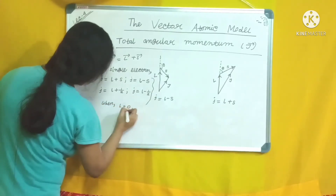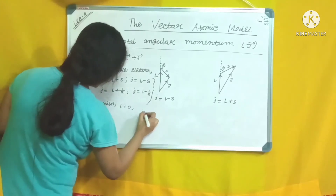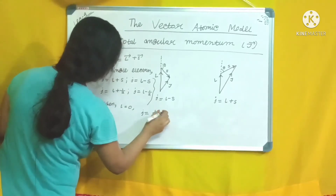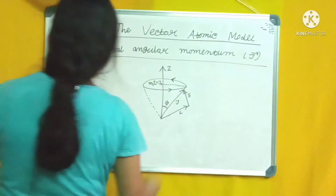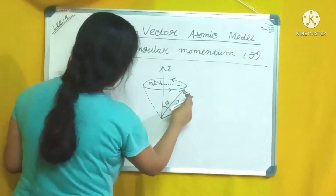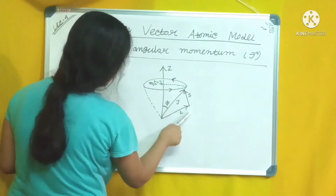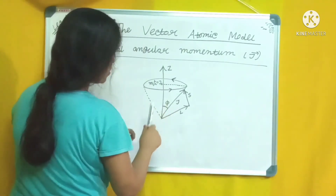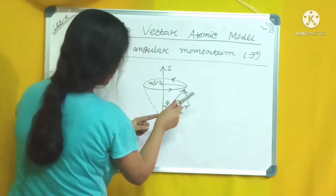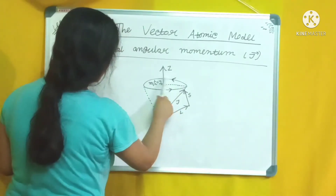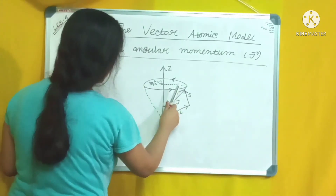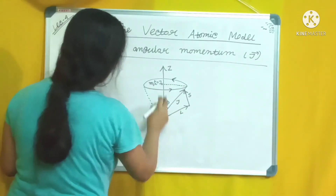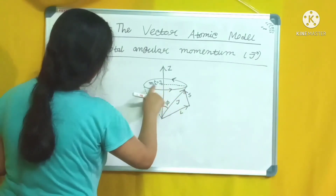When l = 0, J = ½. Whenever J precesses around the z-axis making angle φ with it, L and S will also precess around J. So J precesses around the z-axis and L and S precess around J in this fashion.